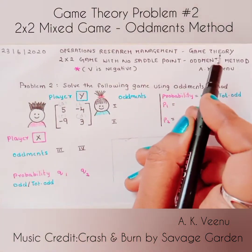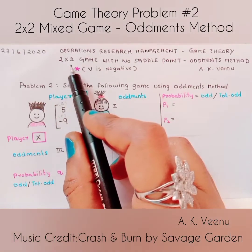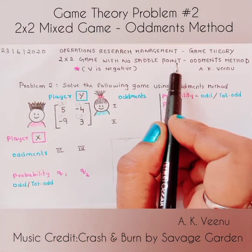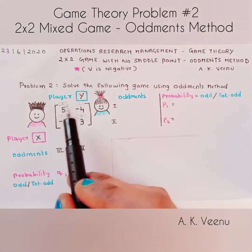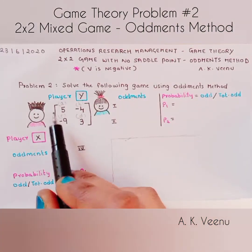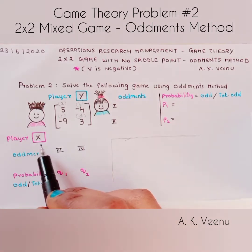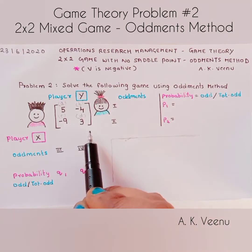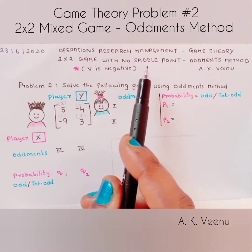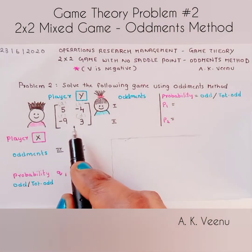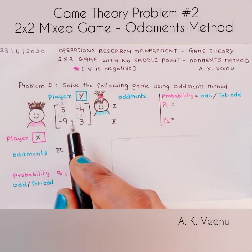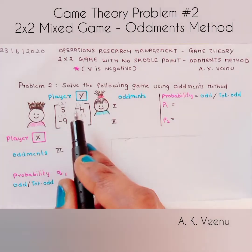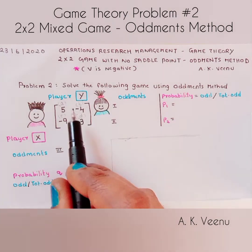Welcome to game theory. Today we are going to solve a 2x2 game with no saddle point using the oddments method. Here we have a 2x2 payoff matrix of player X and player Y. This is a mixed game, which means it has no saddle point. In a pure game each player has one best strategy, while in a mixed game each player can use a combination of both strategies.